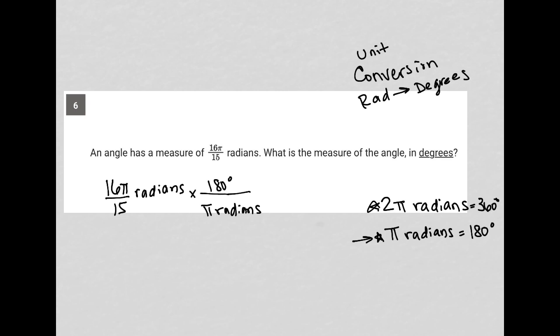I'm always looking to have the unit that I want to cancel, or that I want to convert away from, to be diagonal, so I can cross them out. We'll also see here that the π cancels out diagonally as well. And now all I'm left with is the unit degrees, which is what I want.